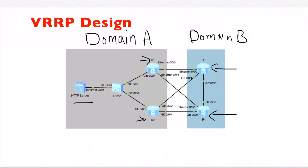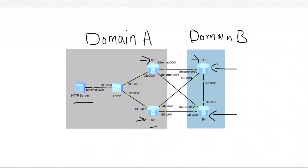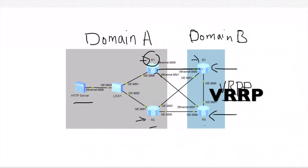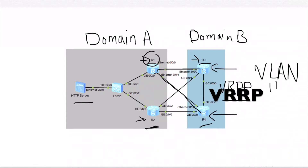R1 and R2 are connected to R3 and R4 with full redundancy. R3 and R4 provide VRRP for R1, covering the connection between R1 and R3 and the connection between R1 and R4, and the same for R2. The connection for R1 with R3 and R4 is a VLAN connection over VLAN 11, and VRRP is configured on top of it.